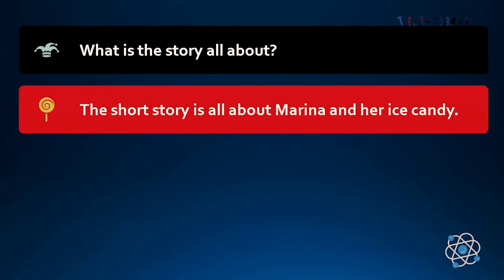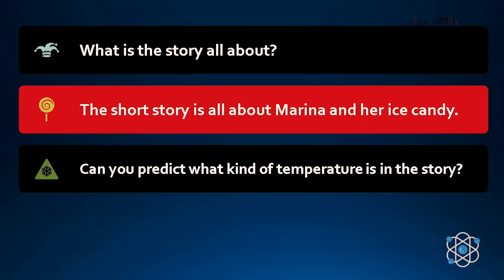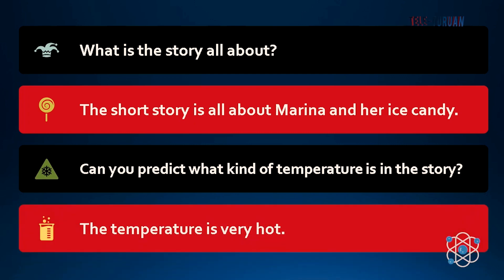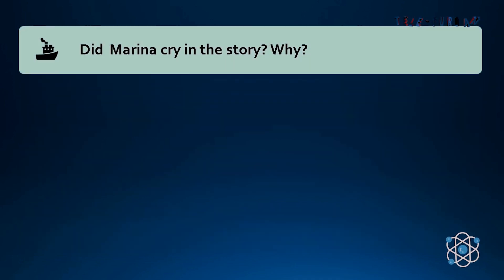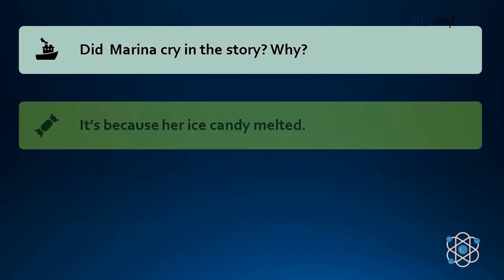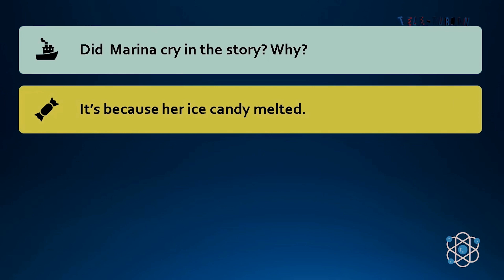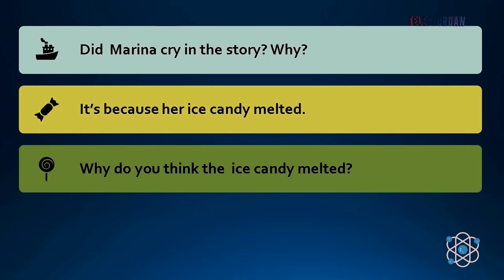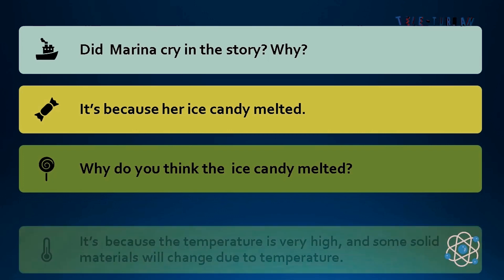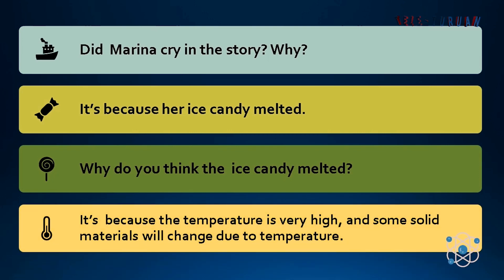Correct! The short story is all about Marina and her ice candy. Can you predict what kind of temperature is in the story? Very good! The temperature is very, very hot. Did Marina cry in the story? Why? Correct! It's because her ice candy melted. Why do you think the ice candy melted? It's because the temperature is very high and some solid materials will change due to temperature.